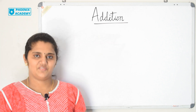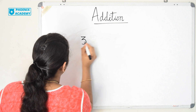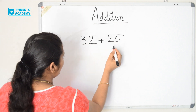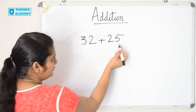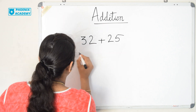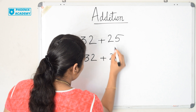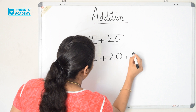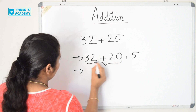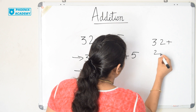Let's see some of the methods. The first method I am going to show you is breaking one number. Let's add 32 plus 25. We are going to break the second number 25. 25 is how many 1's and 10's? 5 ones and 2 tens. 32 plus 2 tens means 20, plus 5 ones. Let's add the tens first. 32 plus 20. What is 32 plus 20?